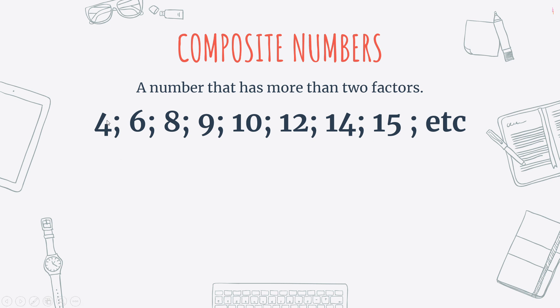So over here, I can say 4 times 1 is 4. That's two factors. And I can also say 2 times 2 is 4. With number 6, I can say 1 times 6 is 6. I can say 2 times 3 is 6. So there's more than two factors for composite numbers.